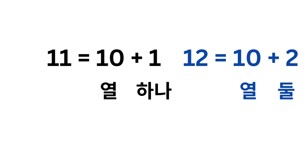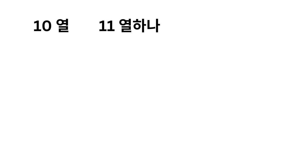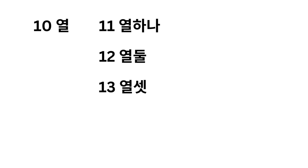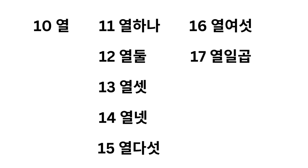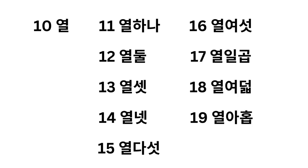Should we actually have a go? 열 하나, 열 둘, 열 셋, 열 넷, 열 다섯, 열 여섯, 열 일곱, 열 여덟, 열 아홉, 스물.